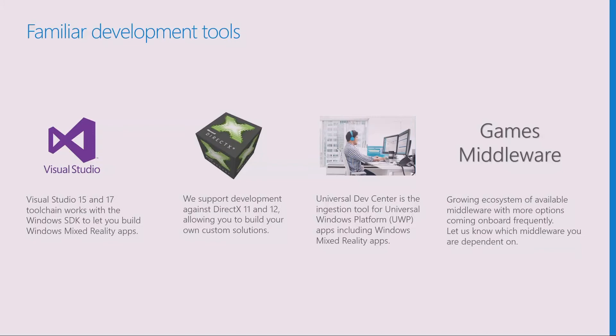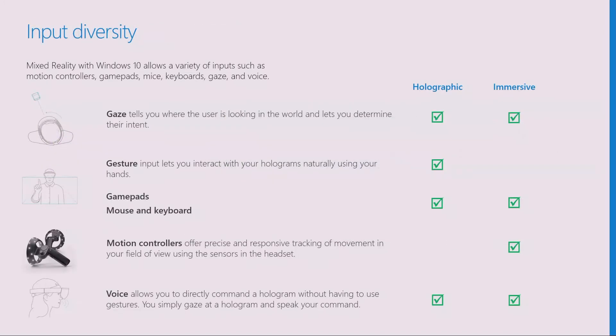If there are other middleware partners you're working with for your applications, let us know — we're constantly adding partners. We want to hear from you. Let's talk inputs. When you want to interact with something, you look at it — gaze works across the board, the same APIs work the same way across both headsets. Gesture works on HoloLens because of cameras doing hand tracking. Game pads, mouse, and keyboard work across both. At Build, we announced motion controllers for Windows Mixed Reality that offer six degrees of freedom positional tracking based solely off the inside-out cameras already inside the headsets — no external markers needed. Voice is also a method of input for both.